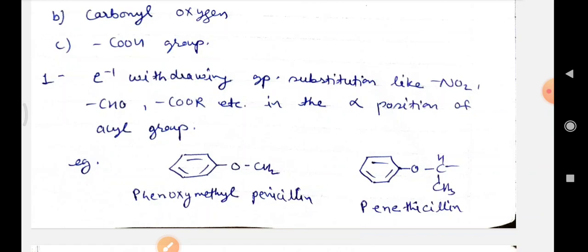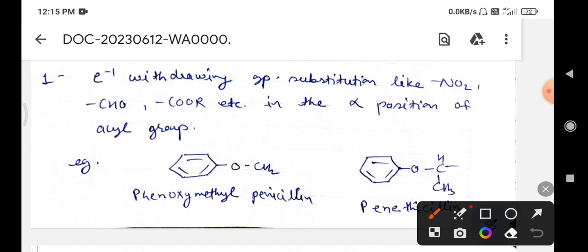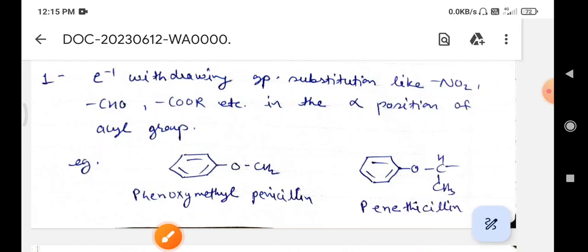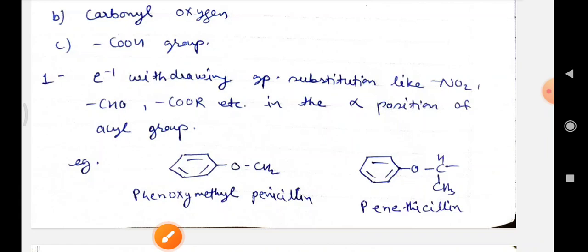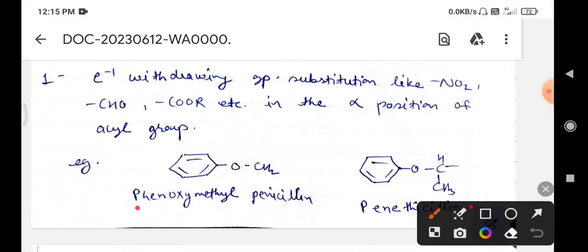Coming to the alteration in the R side chain. The substitution of electron-withdrawing groups like NO2, CHO, or COR in the alpha position of the acyl group increases the resistance to acid hydrolysis and enhances the stability by decreasing the nucleophilicity of the carbonyl oxygen. Examples include phenoxymethylpenicillin or phenethicillin.